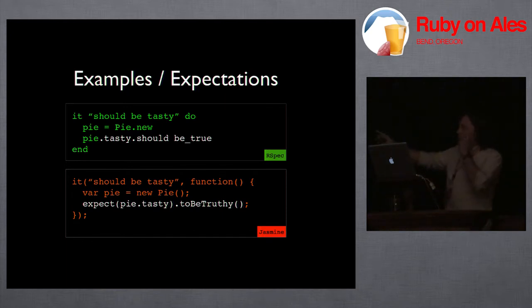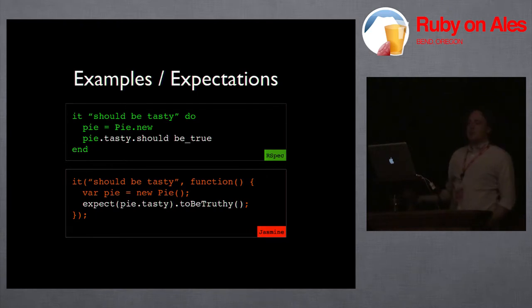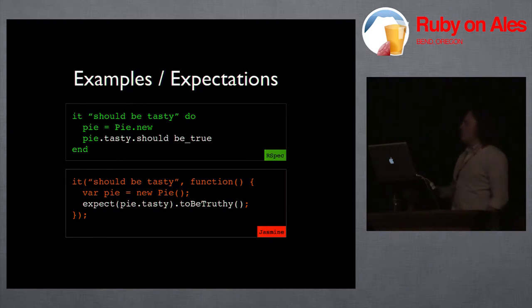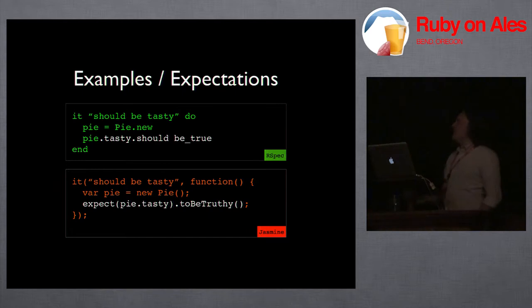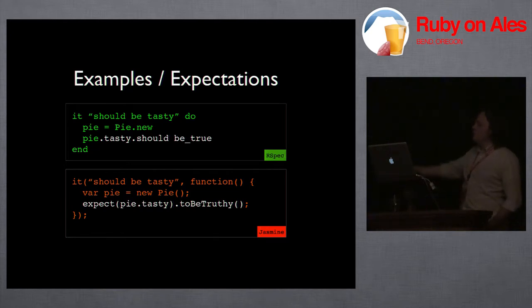In Jasmine, instead of should/should_not/should_receive, Jasmine always uses expect. You expect some kind of value — in this case the tasty attribute of pie — and then use a matcher function in order to actually put that expectation. So it would be expect(pie.tasty).toBeTruthy(). The reason we use toBeTruthy rather than toBe(true) has to do with how JavaScript evaluates certain statements. There are a few quirks you need to be aware of.